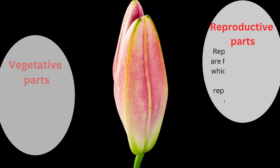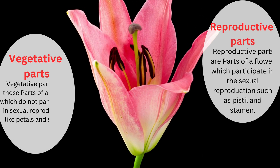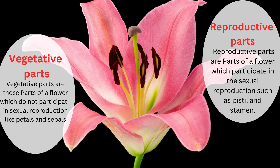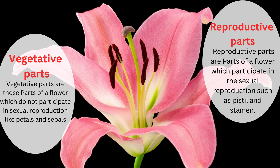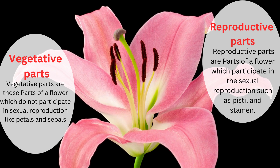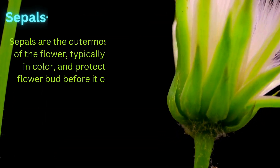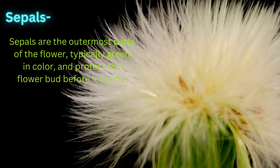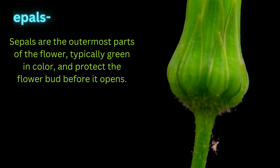Vegetative parts are those parts of a flower which do not participate in sexual reproduction, like petals and sepals. Sepals are the prominent outermost part of the flower, usually green and leaf-like, which protect the flower when it is in bud stage while providing support and covering for the delicate inner structures.